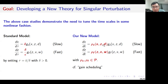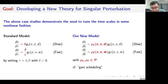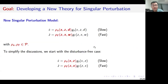Basically, I replace the perturbation parameters with perturbation functions. The functions are state-dependent and positive-valued, meaning they take non-negative values, and when the arguments are non-zero the functions take positive values. This is the new singular perturbation model, but to simplify the discussions I start with the disturbance-free case. For now, we neglect the influence of external disturbances.